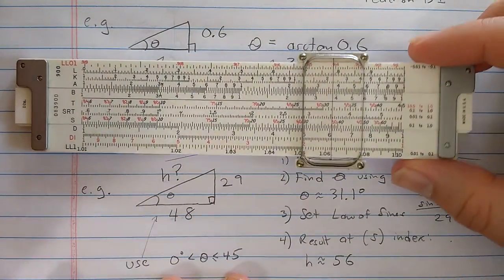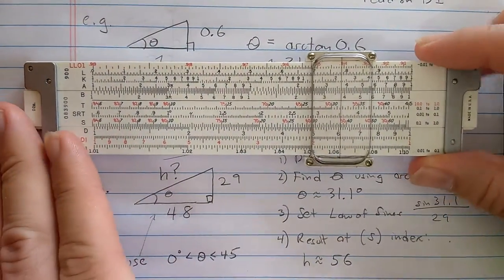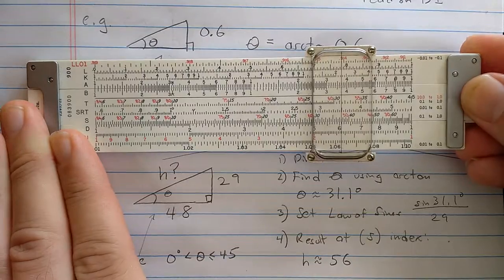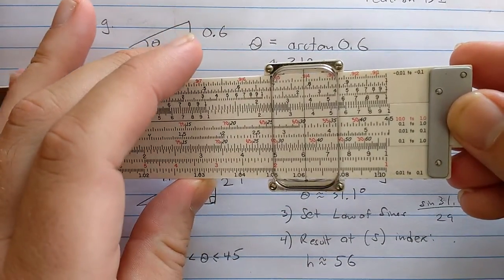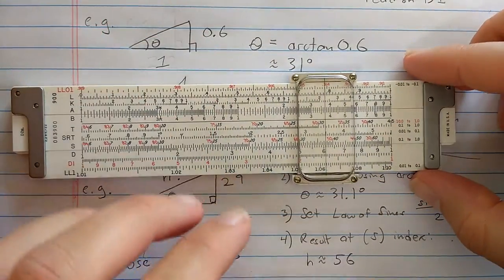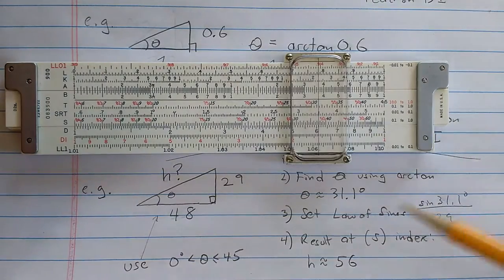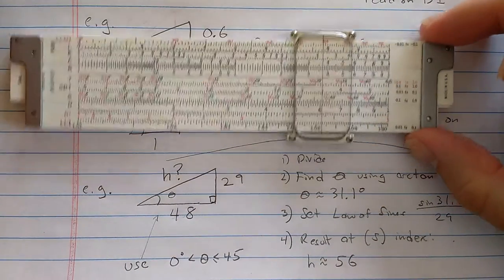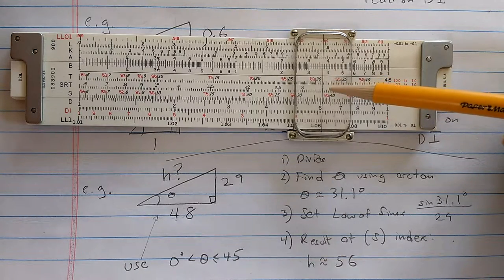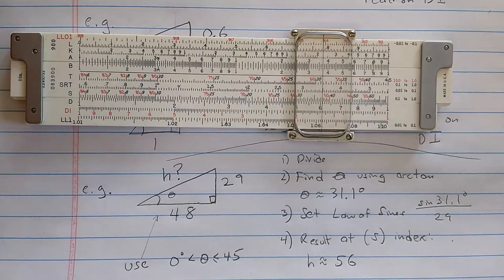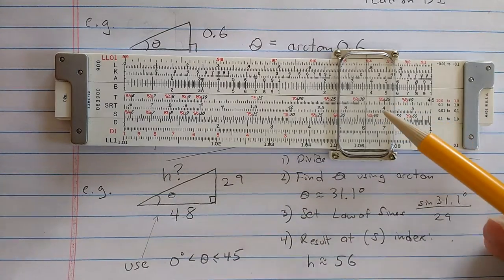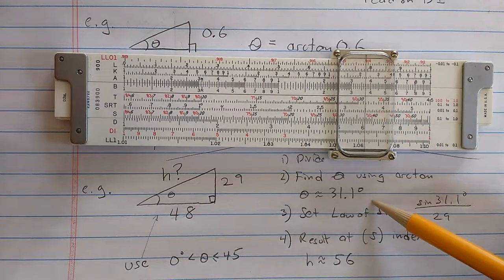Now I'm going to go back to my trig side. So I've computed 29 over 48. The result is on the D scale. I'm aligning the slide rule so I can read the tangent scale. So reading the tangent scale, I'm now doing step 2. Reading the tangent scale, I'm attempting to find the angle. And I'm reading that about 31.1.